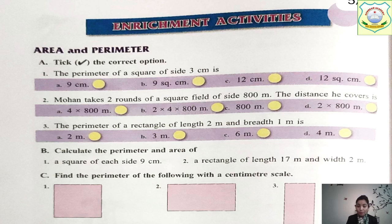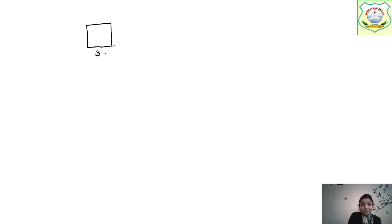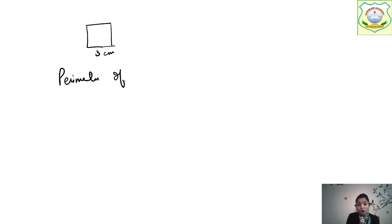Tick the correct option. The first question is: the perimeter of a square of side 3 cm is — now, what is the perimeter of a square of side 3 cm? This is a square with all 4 sides equal to 3 cm. The formula for perimeter of a square is 4 multiplied by side.